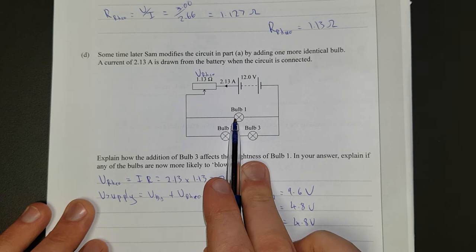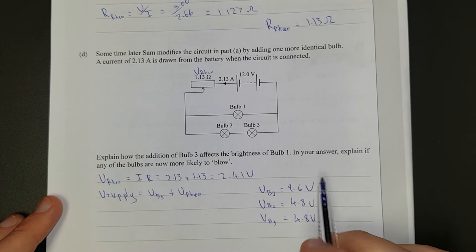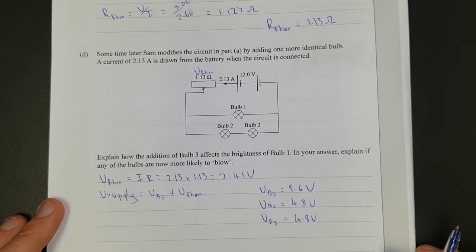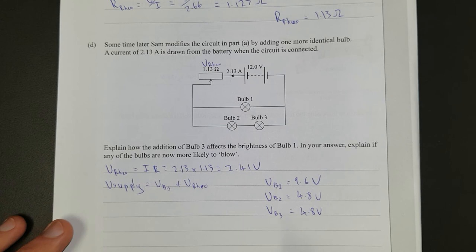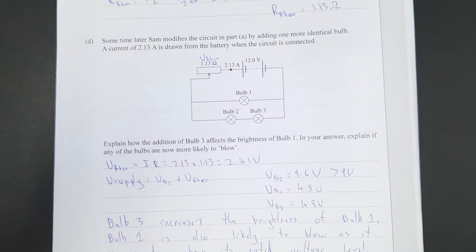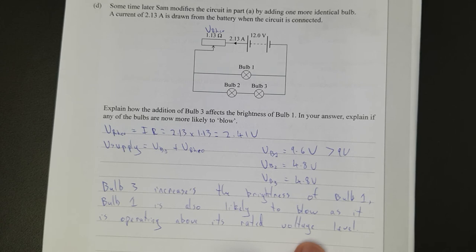Explain how the addition of bulb 3 affects the brightness of bulb 1. In your answer, explain if any of the bulbs are likely to blow. So bulb 3 increases the brightness of bulb 1. The brightness of bulb 1, bulb 1 is also likely to blow, as it is operating above the rated voltage level.